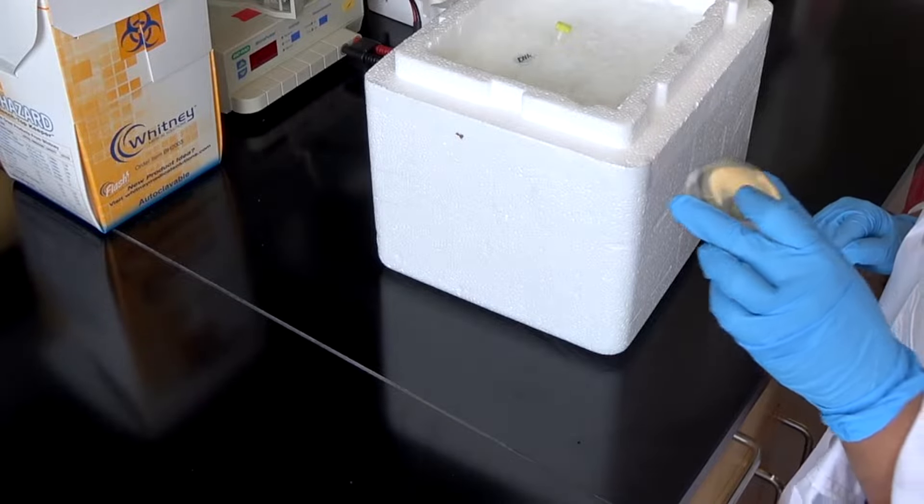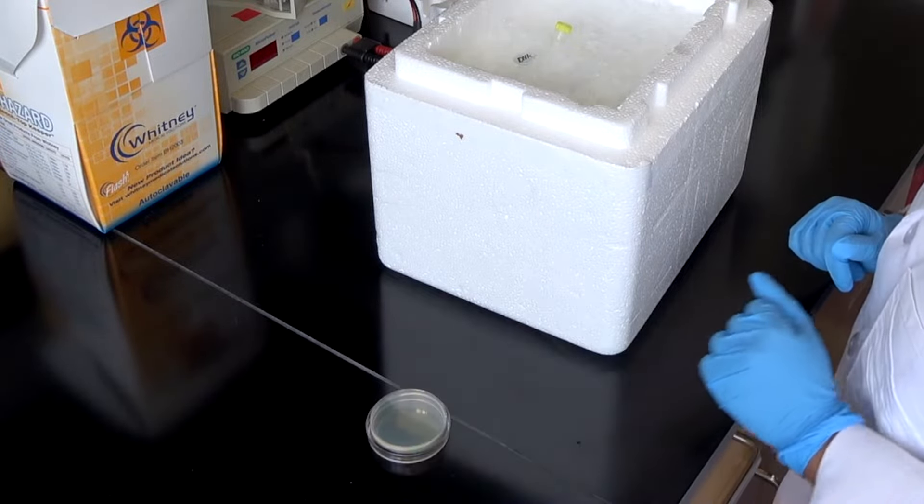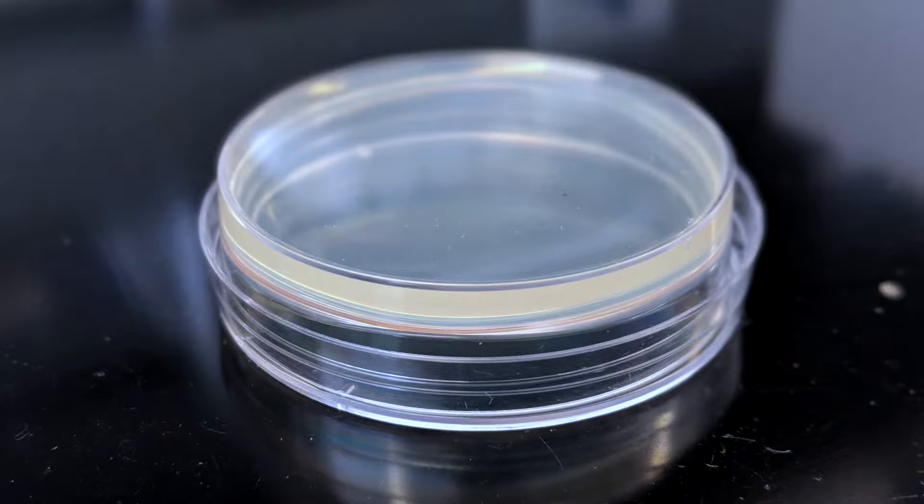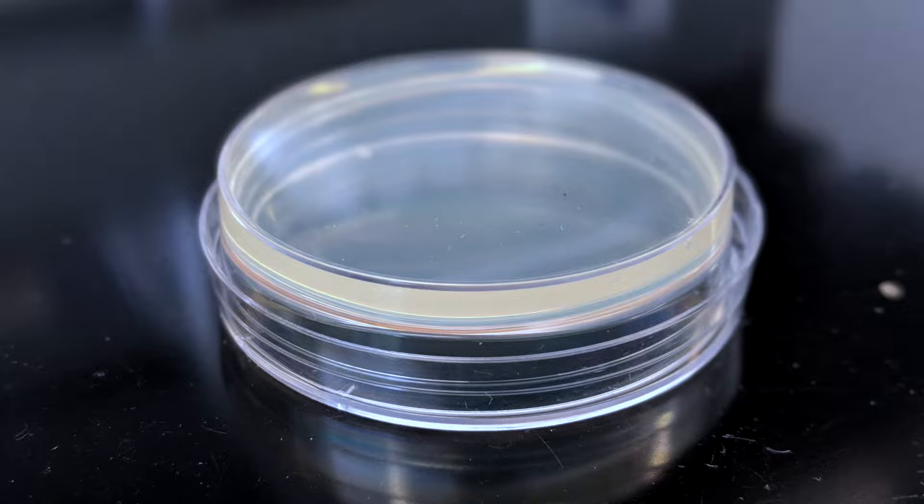As the competent cells thaw, place the appropriate LB-agar plates on your bench. These plates should contain the antibiotic that your plasmid of interest will provide resistance to. The plates will reach room temperature by the time we're ready to spread our transformed cells.